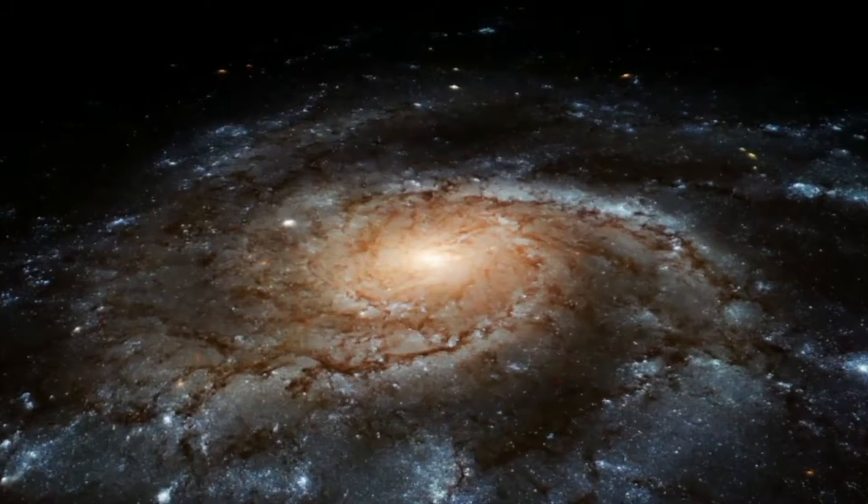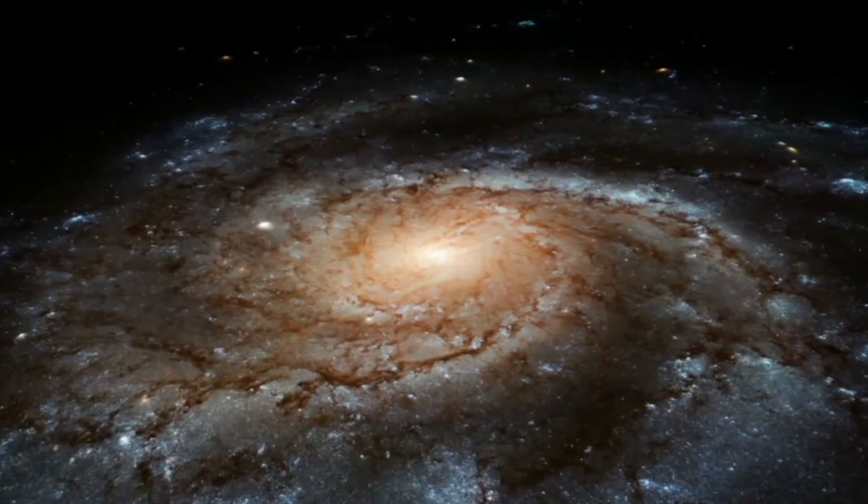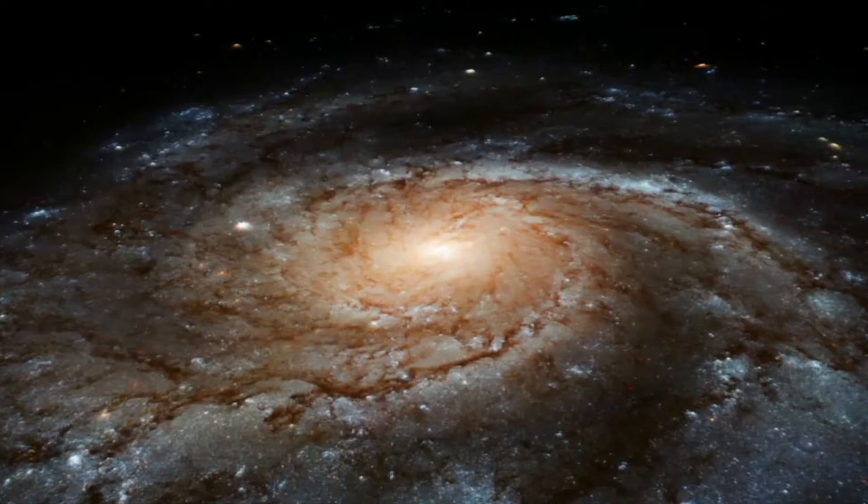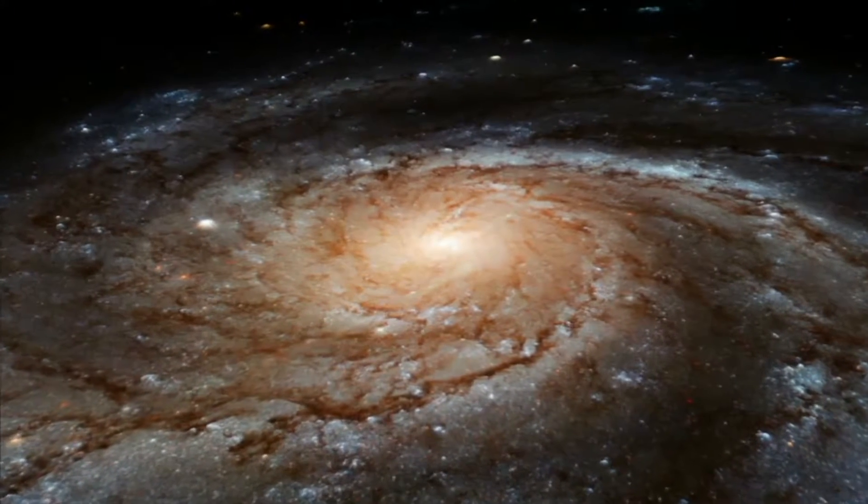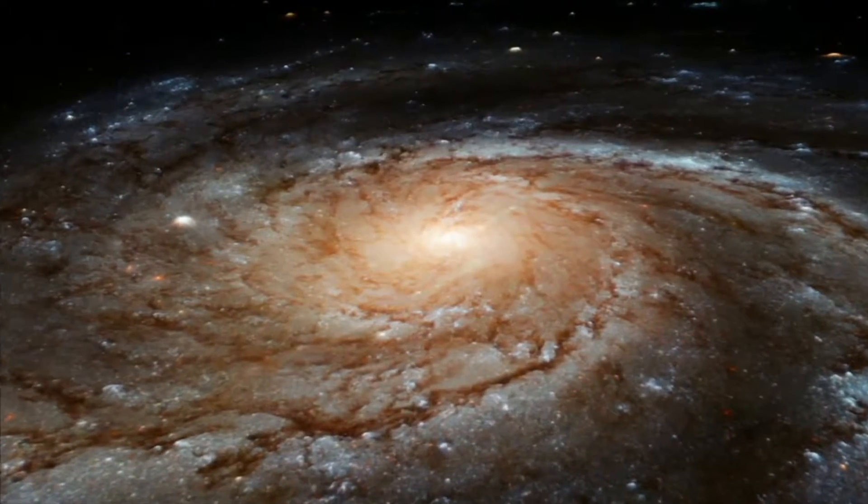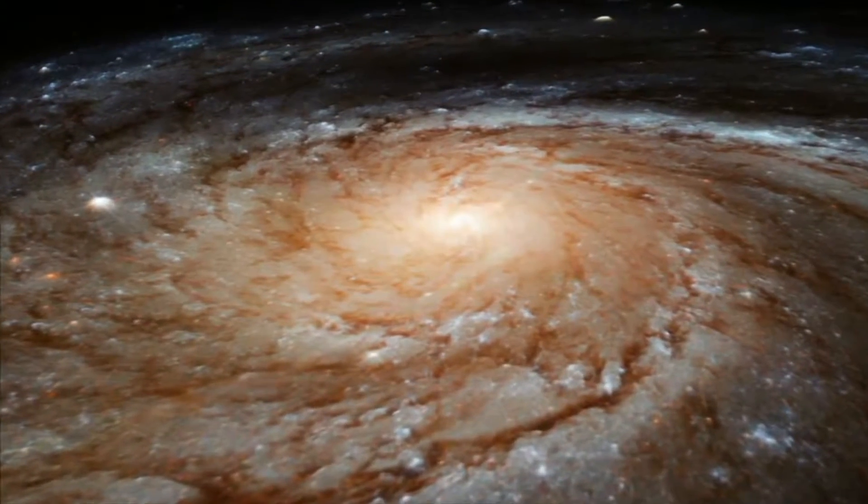Spiral galaxies have a lot of gas, dust, and newly forming stars. Since they have a lot of hot, young stars, they are often among the brightest galaxies in the universe. About 20% of all galaxies are spirals.